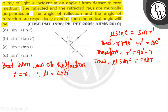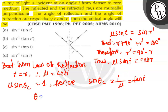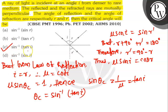Now, the critical angle is the angle of incidence at which the refracted ray goes parallel to the surface. So, mu sin θc is equal to 1. Hence, sin θc is equal to 1 by mu, which equals tan i. So θc is equal to sin inverse of tan i. Option C is the correct answer: sin inverse tan i. Thank you.